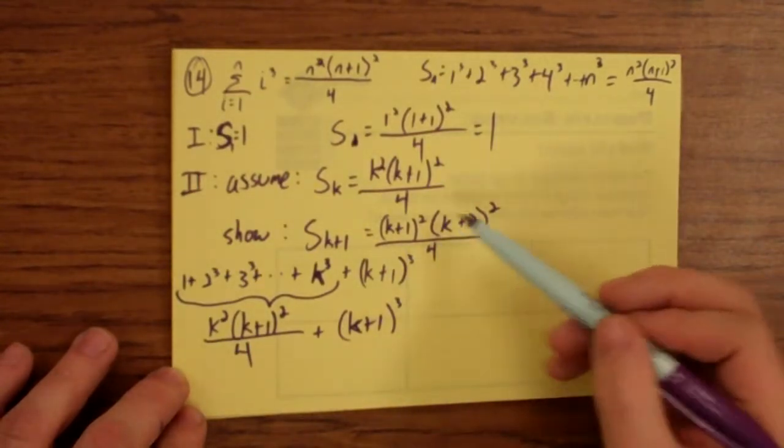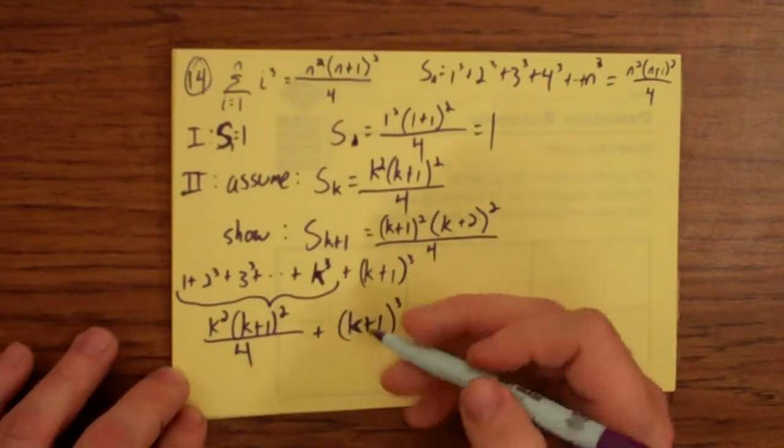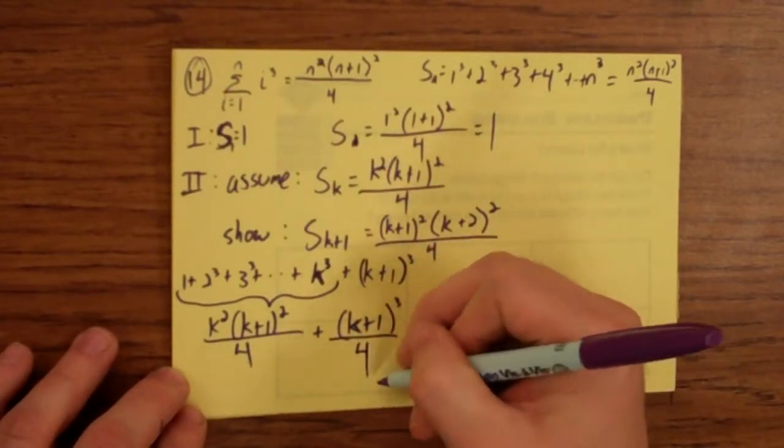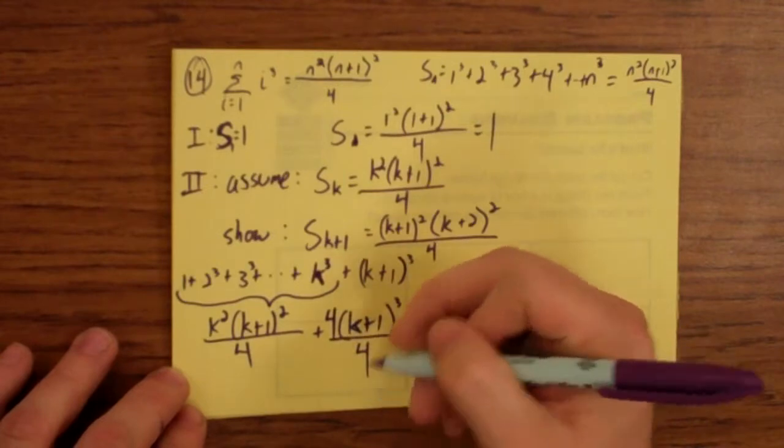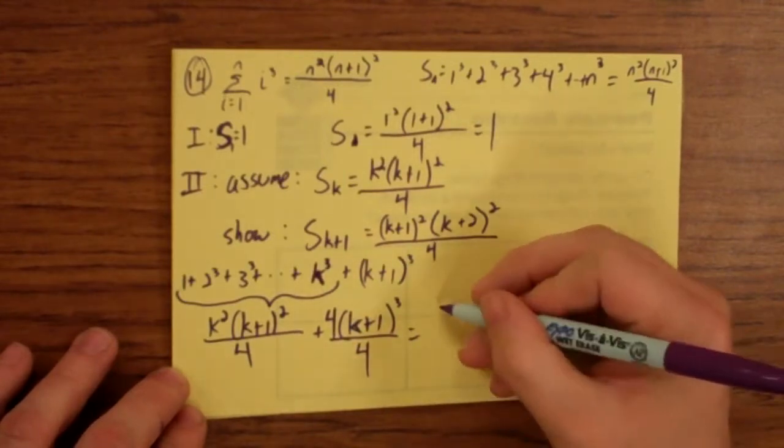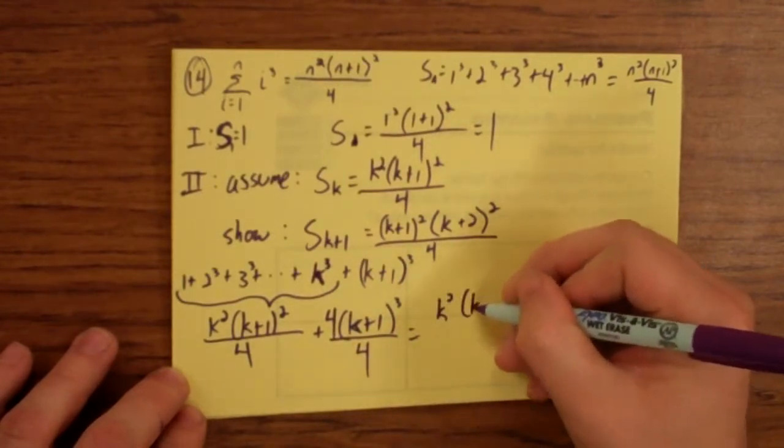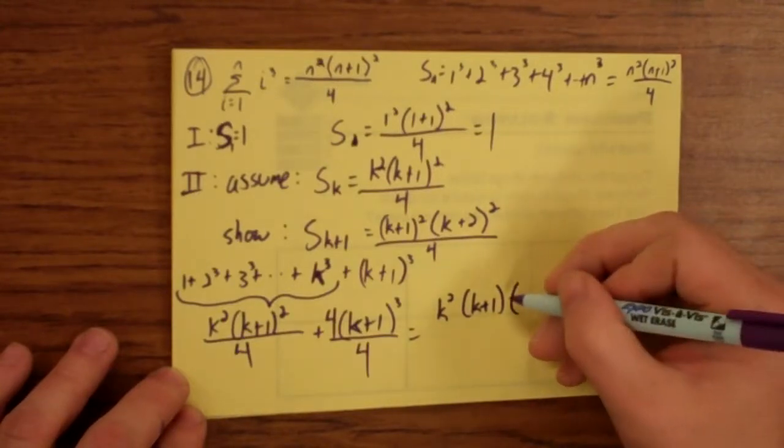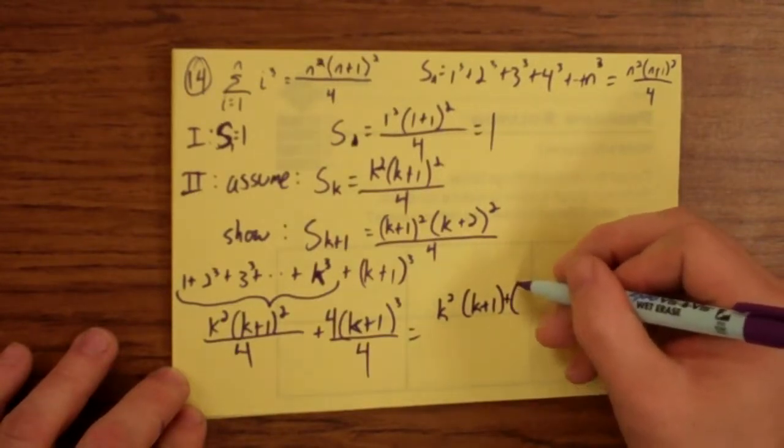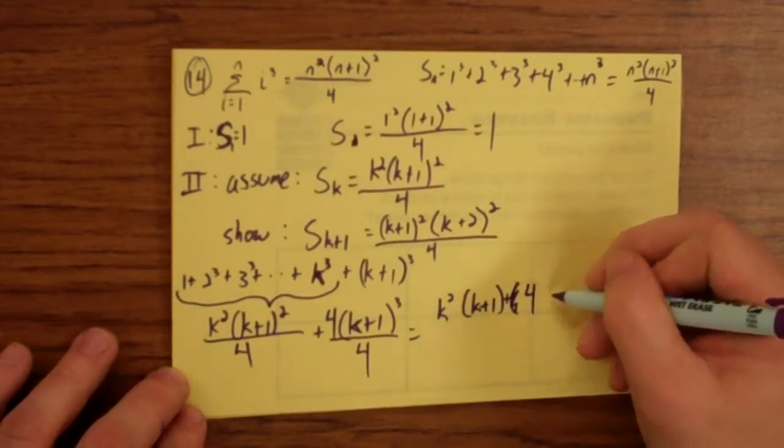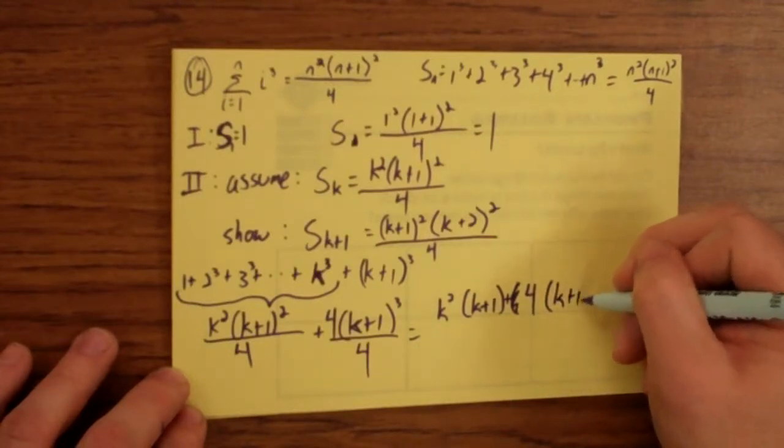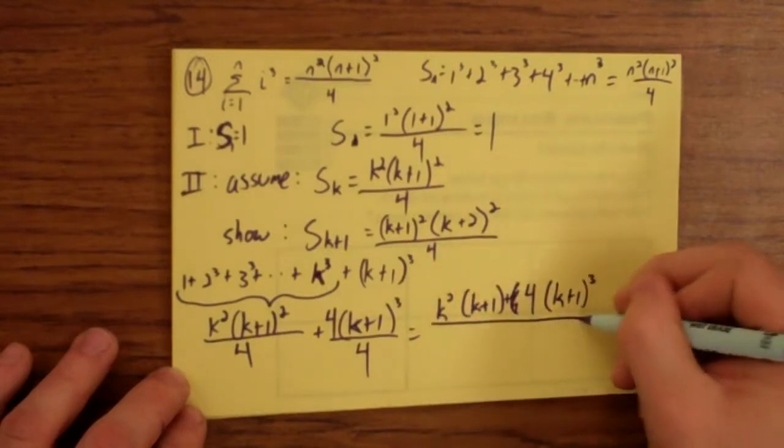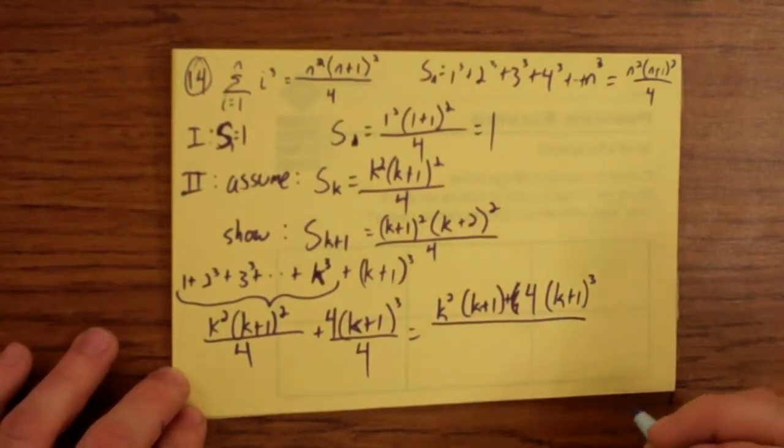Maybe, since this is all over 4, maybe we should try and add these together, which means we need a denominator of 4, which means we need to multiply by 4 on top. So this is k squared times k plus 1 times, or sorry, plus 4 times k plus 1 to the third. All over 4.